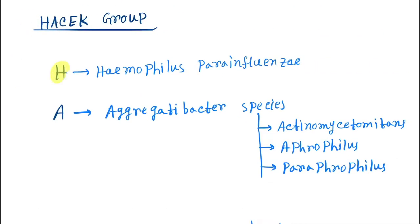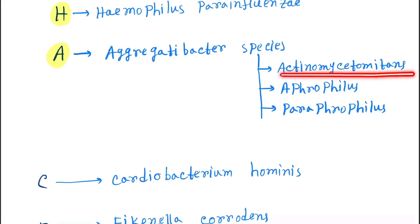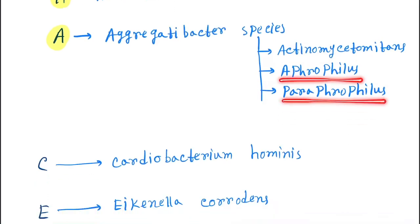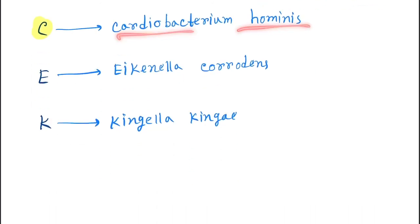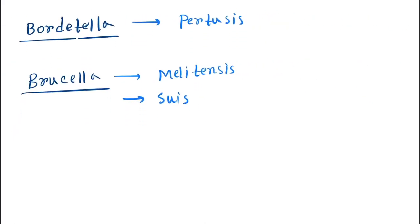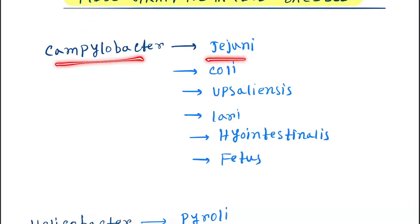Next, HACEK group. H is for Haemophilus parainfluenzae. A is for Aggregatibacter species: Actinobacillus actinomycetemcomitans, Aphrophilus, and Paraphrophilus. C is for Cardiobacterium hominis. E is for Eikenella corrodens. K is for Kingella kingae. Next is Bordetella pertussis and Brucella melitensis and suis.